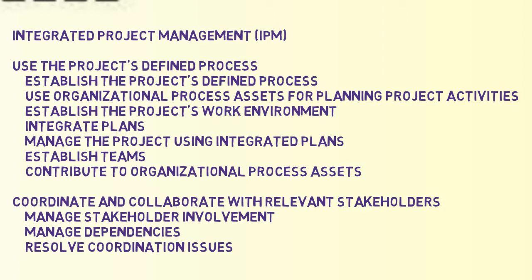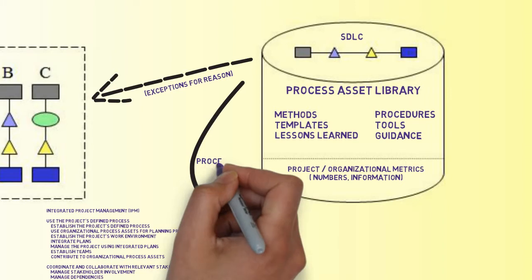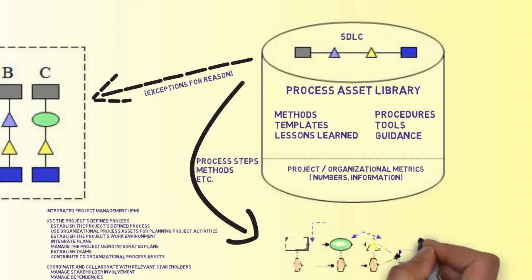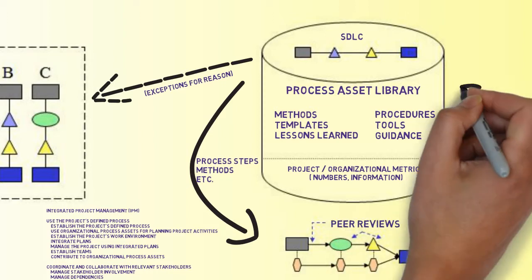For example, if time to market is the driver, the PM would assemble the most efficient set of processes for the project's defined process, then perhaps add in extra peer review cycles to capture the defects that efficiency can incur at the expense of effectiveness.